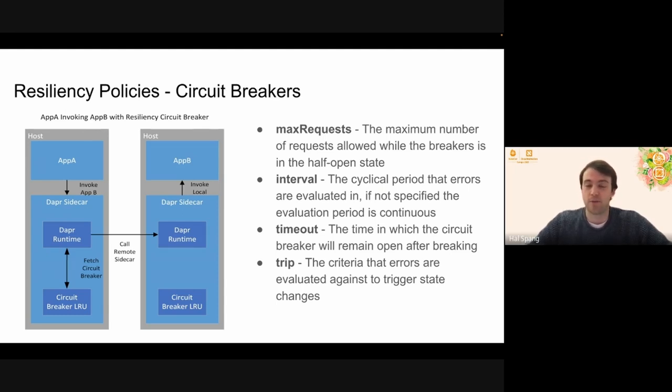Closed, similar to an actual circuit breaker, like in your house's electrical system, means that everything's running normally. Open means we have flipped the circuit breaker, which is stopping all traffic. And then half open is a state where we will let through the max number of requests that you see here. And that's where we look for a successful message or a successful request. If we get a successful request, then the circuit breaker can close again and we can now resume normal traffic. If we don't get a successful request, the circuit breaker goes back to being fully open.